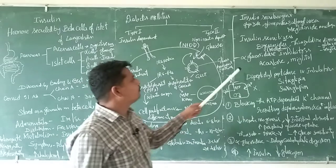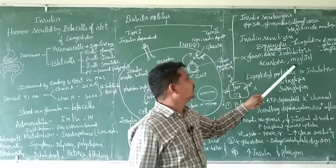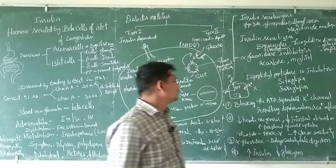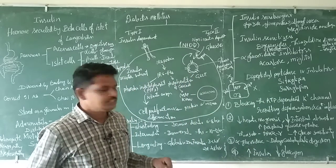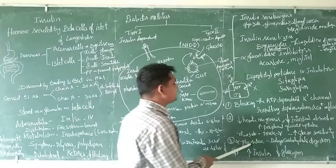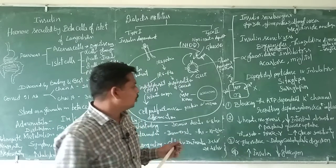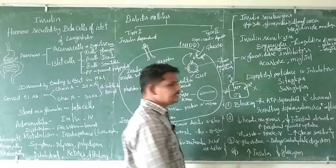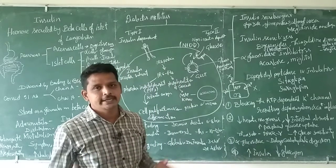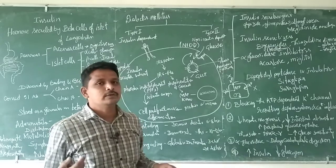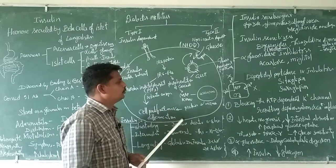The third category is alpha-glucosidase inhibitors, for example acarbose and miglitol. These agents delay carbohydrate digestion. Normally alpha-glucosidase is required for the digestion of carbohydrates to convert them into glucose. By blocking this specific enzyme, the conversion of carbohydrate to glucose is delayed, resulting in decreased blood glucose levels.